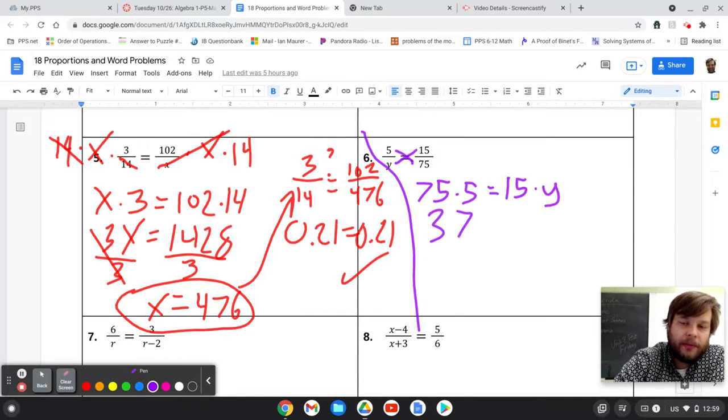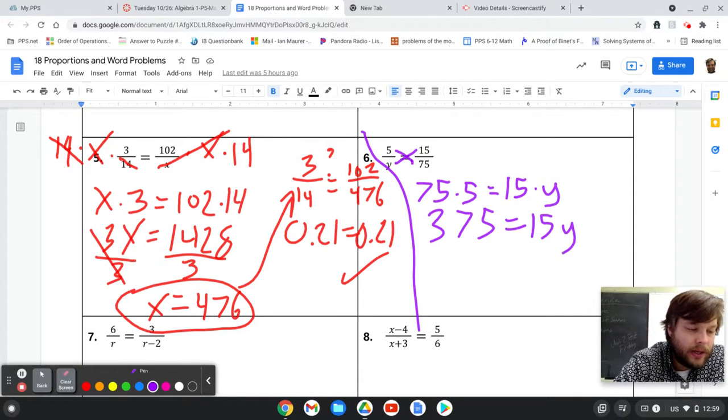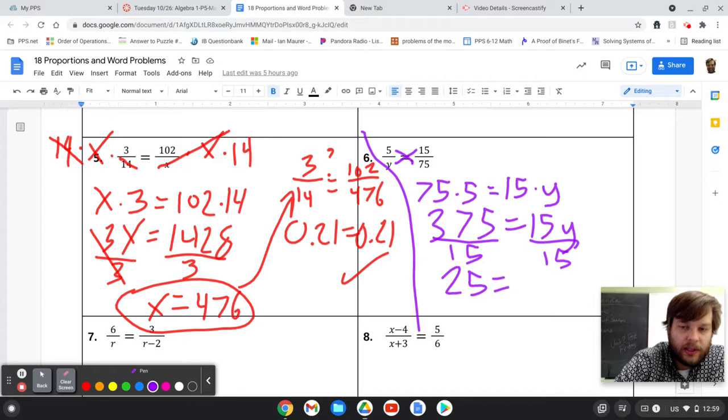75 times 5 is 375. Just did that on a calculator. And then divide both sides by 15. And you get 25 is equal to y.